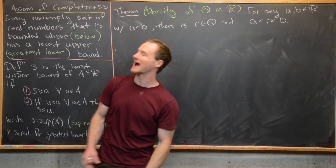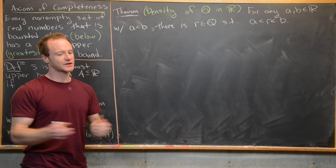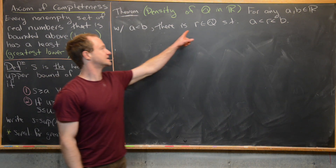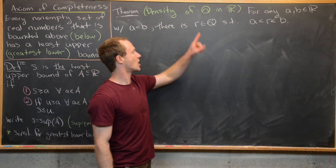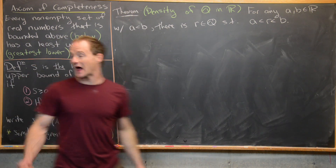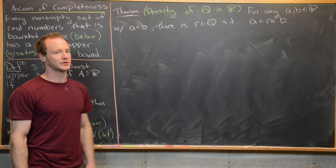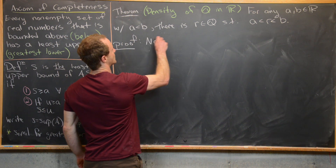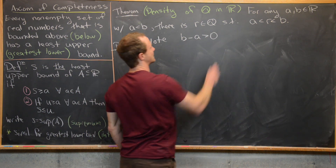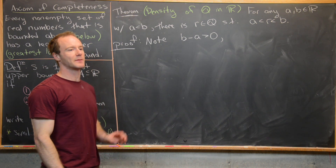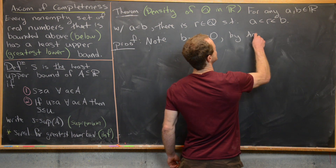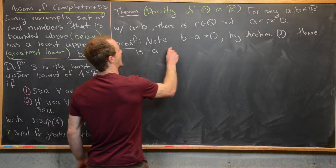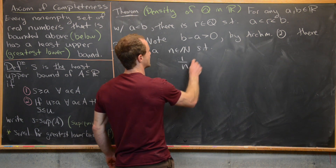The last result is the density of the rational numbers in the real numbers. For any two real numbers A and B with A < B, there is a rational number R with A < R < B. We'll use the Archimedean principle. Since A < B, we have B − A > 0, so by part two of the Archimedean principle, there is a natural number N such that 1/N < B − A.